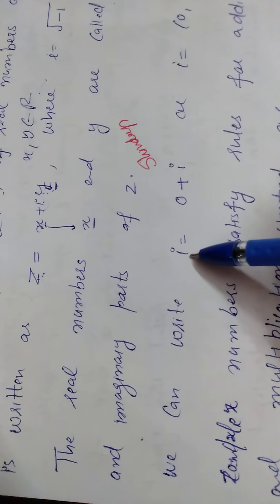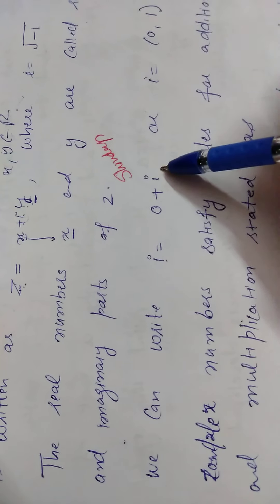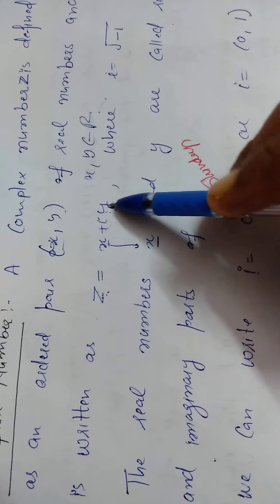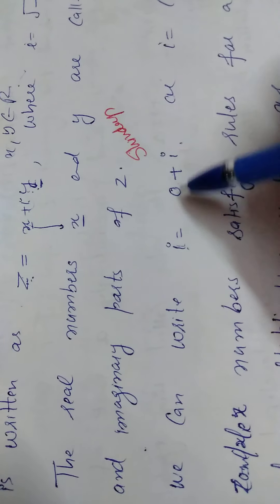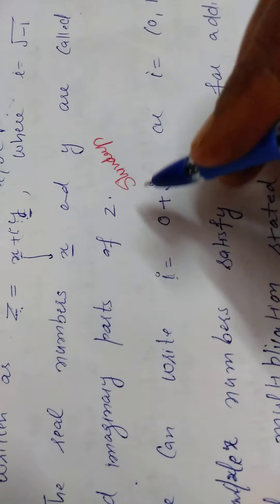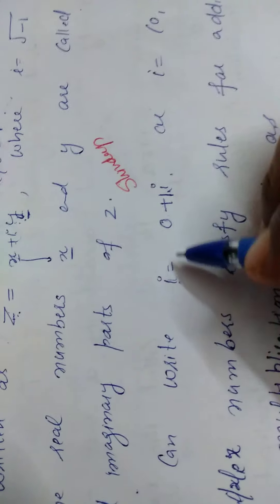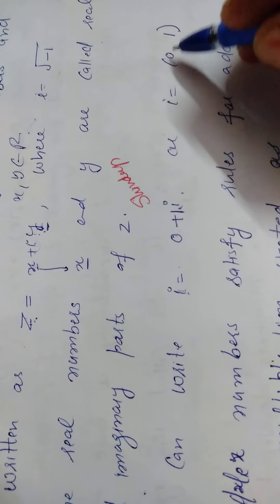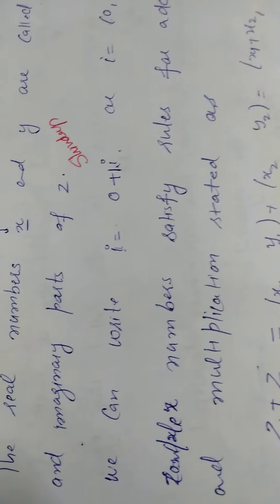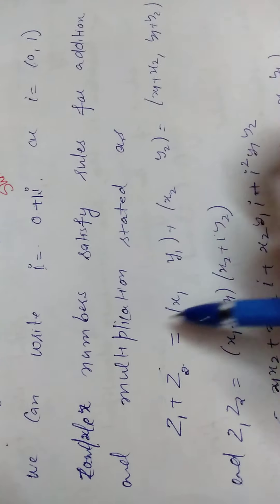We can write iota as 0 plus 1 times iota. Since we represent x plus iota y as the ordered pair (x, y), we can write iota as (0, 1), where 0 is the real part and 1 is the coefficient of iota, which is the imaginary part.